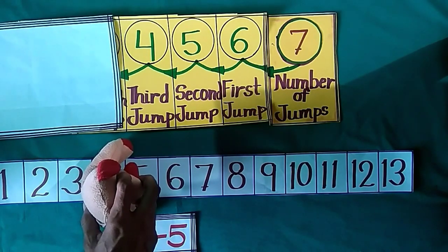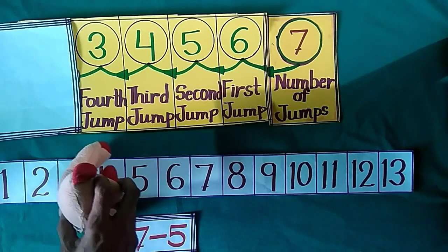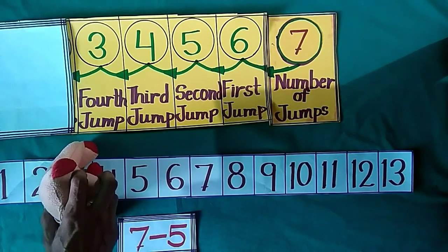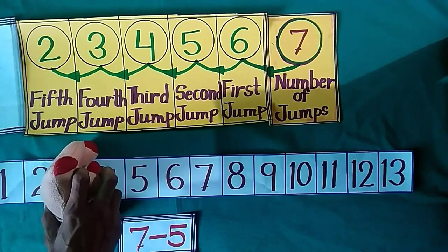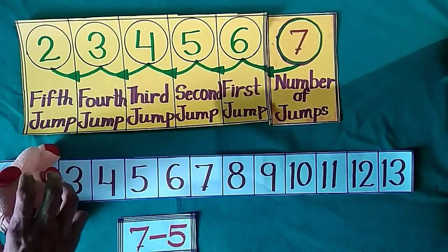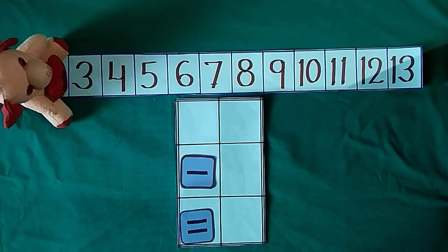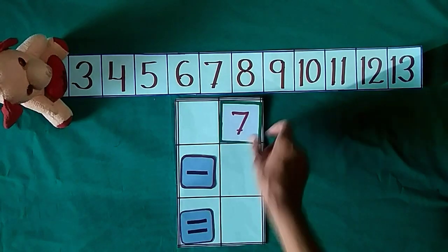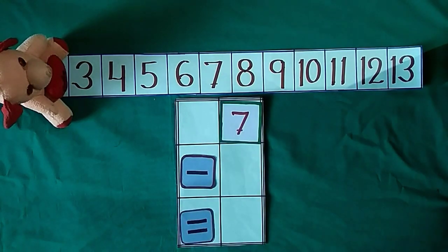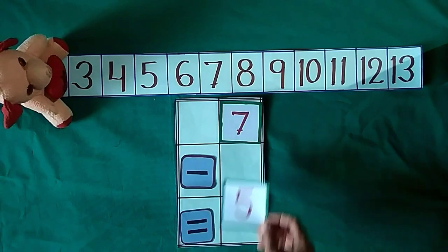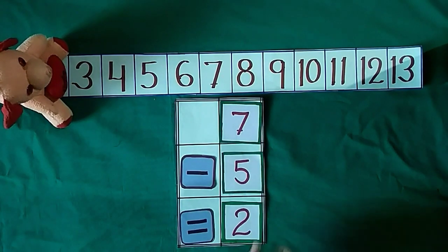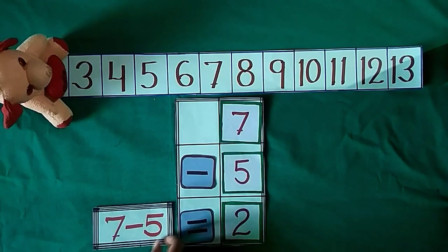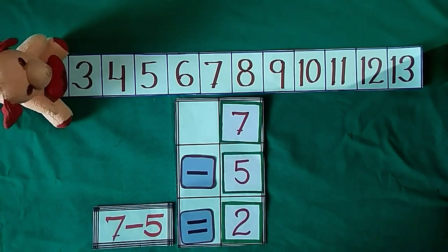When he takes his fourth jump, he reached at 3. And when he takes fifth jump, he reached at 2. So Jimmy stands at 7 and he takes 5 jumps. At last he reached at number 2. So 7 minus 5 is equal to 2.